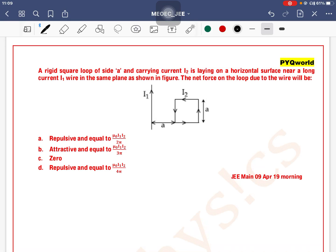A rigid square loop of side a and carrying current i2 is lying on a horizontal surface near a long current i1 wire in the same plane as shown in the figure. The net force on the loop due to the wire will be - okay, so you have to use the formula directly for this.